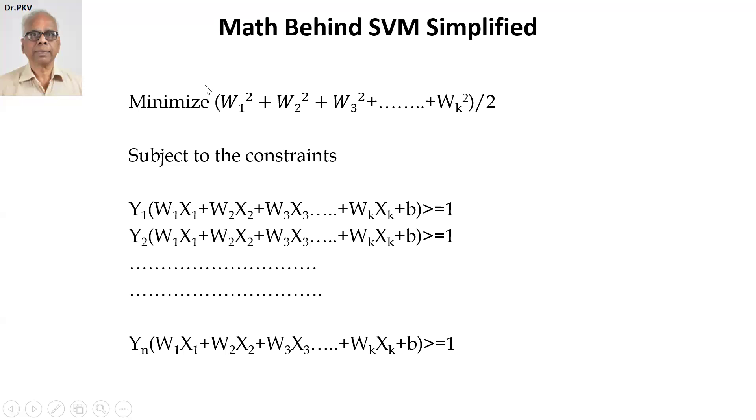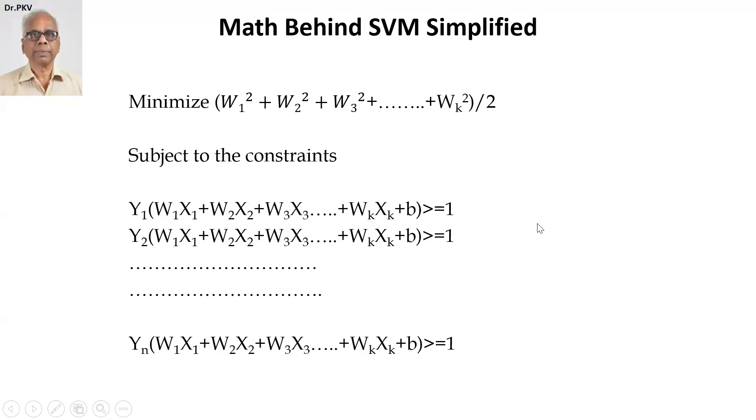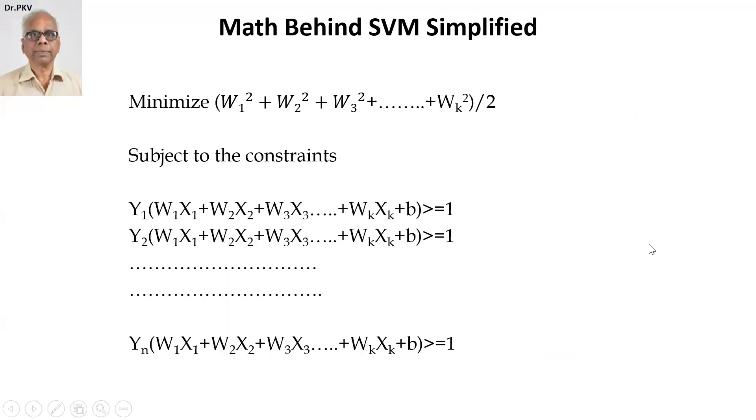Maximize the distance margin, sorry, is same as minimizing one by the distance margin, two by the distance margin. Look at the previous slide. Two by the distance margin is to be maximized, which is same as minimizing what you call norm W by two, one by D. So this is precisely what I have done. And subject to these constraints, N constraints, find out the coordinates.